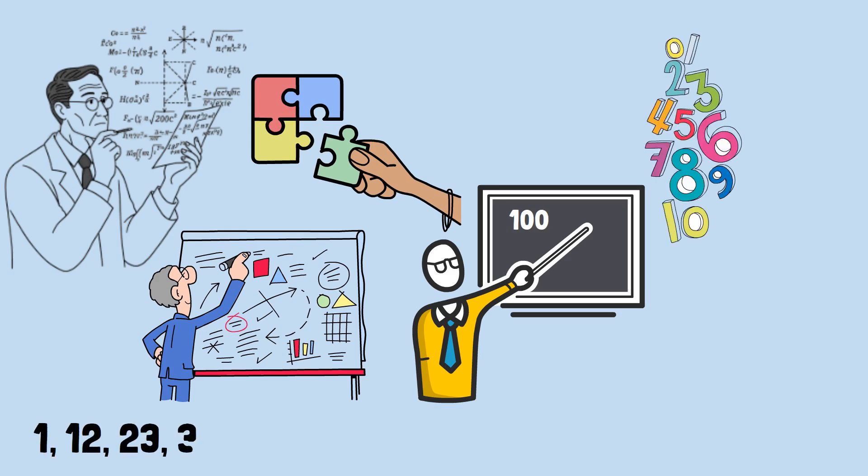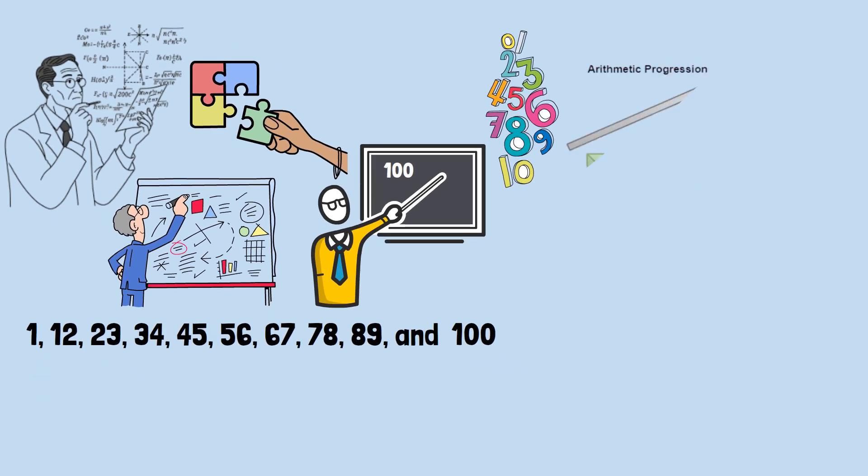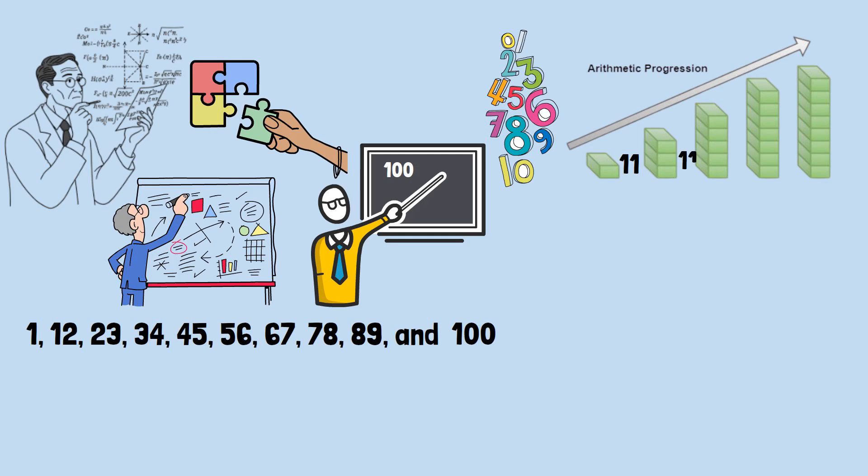These numbers, 1, 12, 23, 34, 45, 56, 67, 78, 89, and finally 100, form what mathematicians call an arithmetic progression, where each term is exactly 11 more than the previous one.